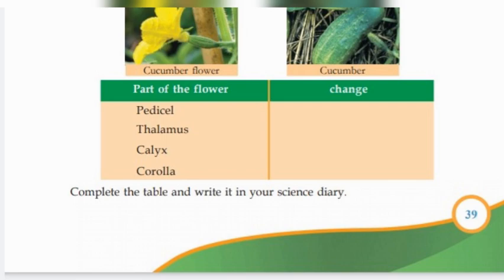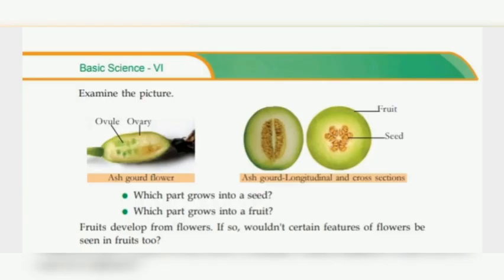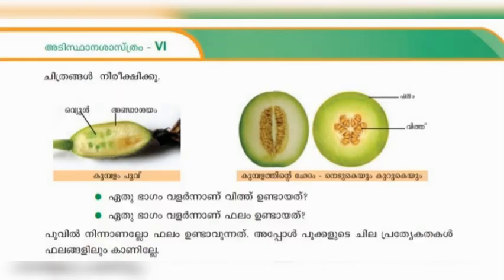Next, examine the picture of the ovary of the ashgourd flower — its longitudinal and cross section. Now we know that self-pollination is of two types.